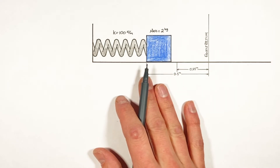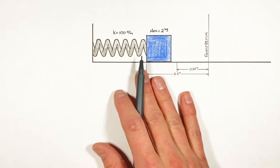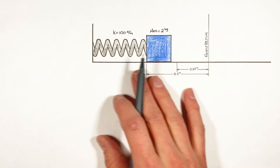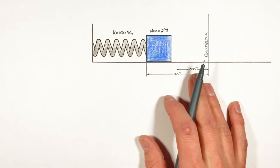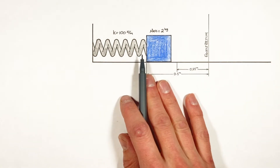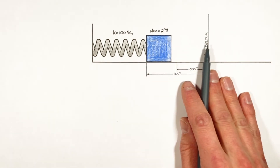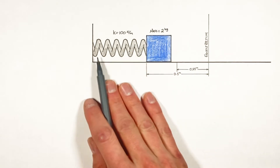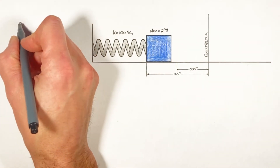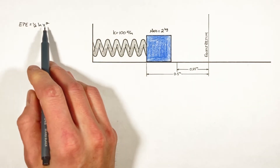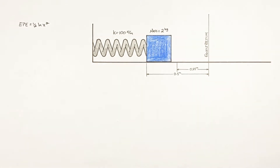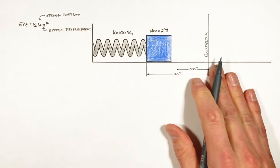We're going to construct an equation that tells us exactly how fast this block is going at any position in its oscillation. To do that, we look at energy. As we compress this spring from equilibrium, we're effectively storing energy in the spring. The energy stored in a spring is given by one-half kx squared, where k is the spring constant and x is how far the spring has been compressed.